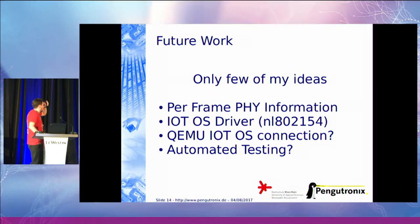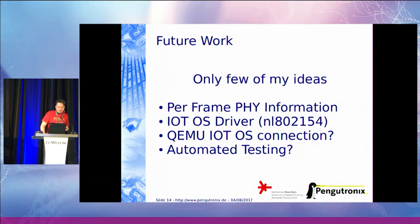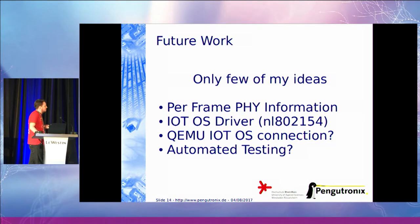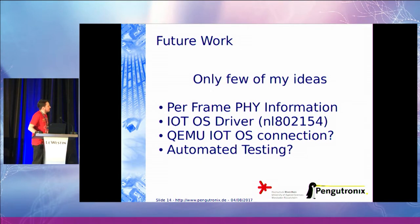For future work, we have in 802.15.4 some PHY information in the PHY header, and we need to provide this somehow in userspace over AF_PACKET. I think we can also use ancillary data to provide the Link Quality indicator value, which is per frame. For userspace stacks we need to provide this value per frame over AF_PACKET, so I think we can add them over the ancillary data.